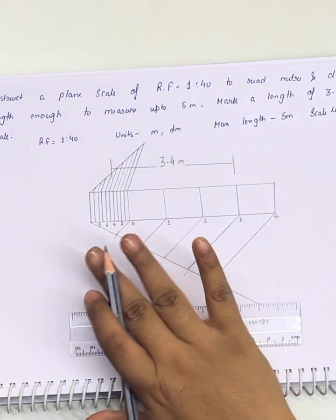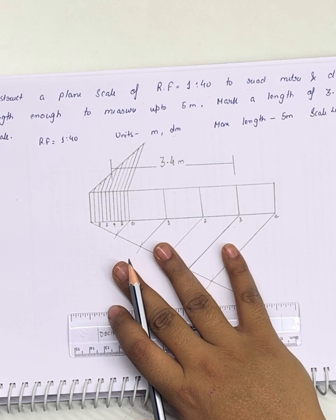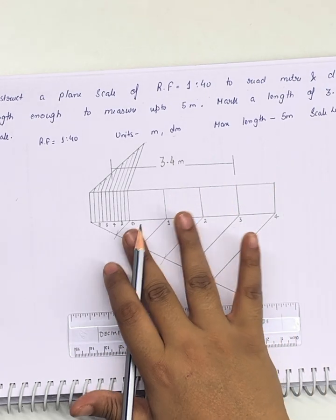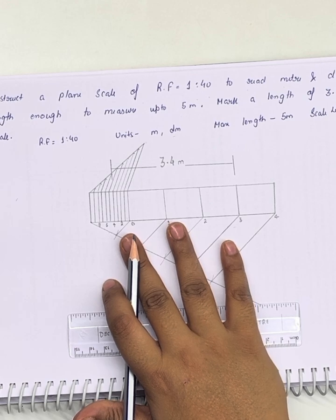Similarly, we have drawn our scale on the units of meters and decimeters at an RF of 1 is to 40. We can measure any other length on this scale. This completes a plane scale.